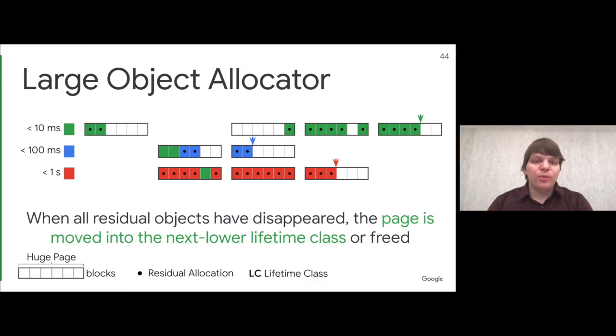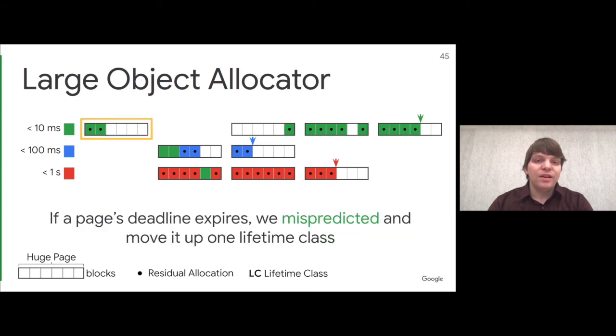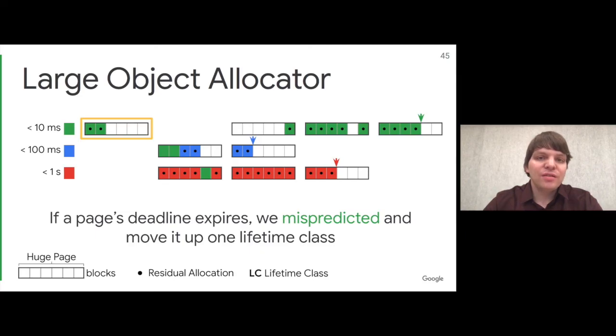However, this approach only works if all predictions were correct. How do we handle mispredictions? This is where the invariant becomes important, that every page lives for at most 1.1x its original lifetime class. If we see a page that significantly outlived its original lifetime, we know there was a misprediction. We detect this by setting a deadline for every page, currently 4x the original lifetime, and if that deadline is exceeded, we reclassify the page as the next higher lifetime class. This way, all pages eventually end up in the right lifetime class, and we can tolerate mispredictions.